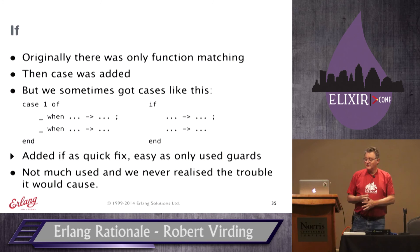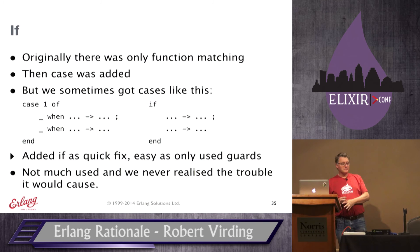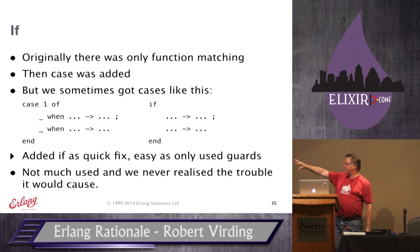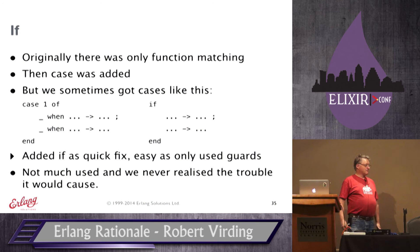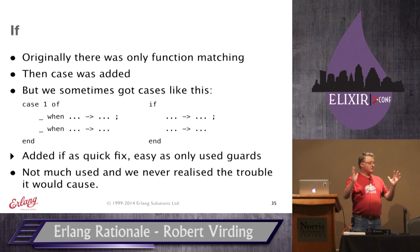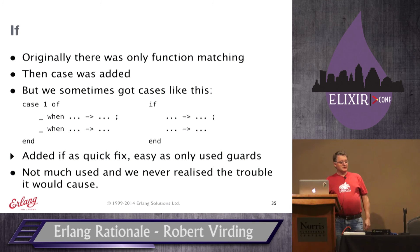After semicolons, commas, and dots, the 'if' expression is what people complain about most. Honestly, it's a hack. Originally we only had functions; we added case. But sometimes people just wanted the guard tests without pattern matching, so they'd write a case with only guards — which isn't beautiful. The simple hack: remove the pattern matching bit, keep the guard tests, and call it 'if'. It went into the compiler quickly. It only uses guards — very simple — but it does have its limitations and wasn't used very much as a result.